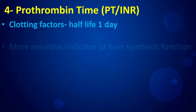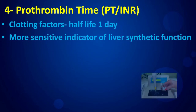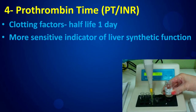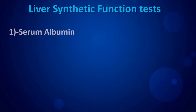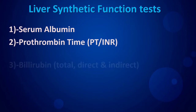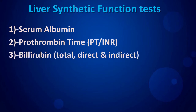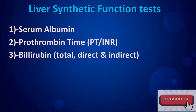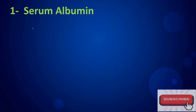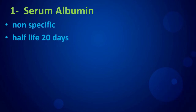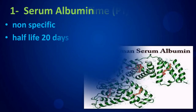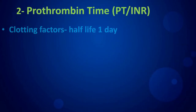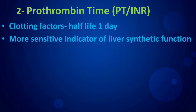Prothrombin time reflects clotting factors with a half-life of one day, making it a more sensitive indicator of liver synthetic function than albumin. The liver synthetic function tests are serum albumin, prothrombin time, and bilirubin. Serum albumin is non-specific with a half-life of 20 days, while prothrombin time is more sensitive due to its shorter half-life.